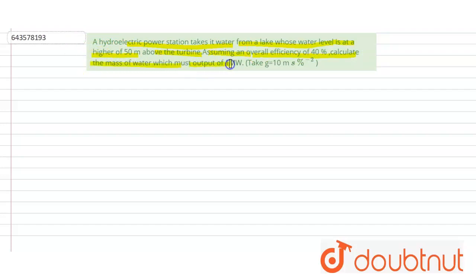must flow for an output of 1 megawatt. Take g is equal to 10 meters per second squared.